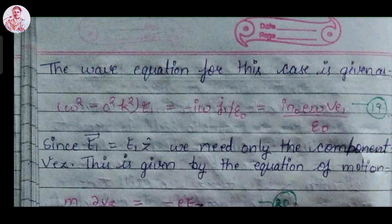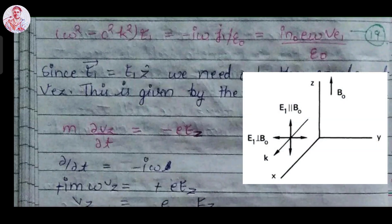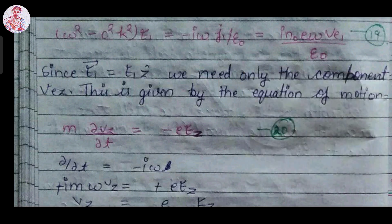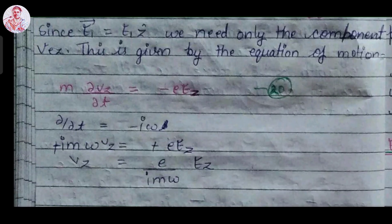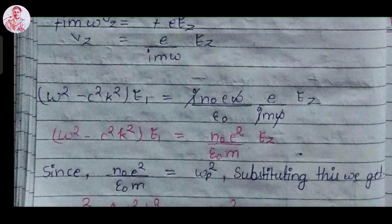From the geometry, vector E equals E ẑ, so we need only the z-component v_z. This is given by the equation of motion: m dv/dt = −eE_z, where z is the direction of electric field vector E. Let's call this equation number 20. From the wave equation we know that ∂/∂t equals −iω. After substituting and simplifying, we get v_z = eE_z / (imω).